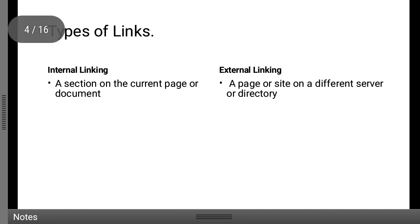Now let us look at the types of links — internal linking and external linking. Think of Wikipedia and Google. In Google, when you click the blue link for Breaking Bad, you are redirected to a completely new website — you are not staying on the same page. That is external linking.